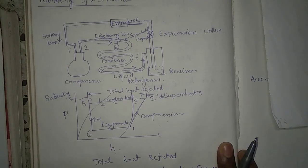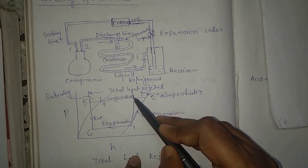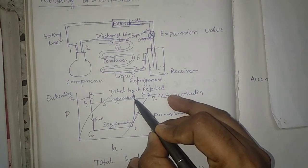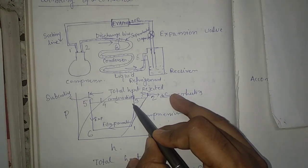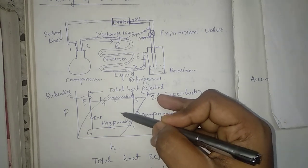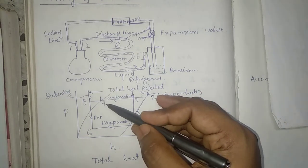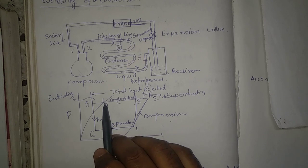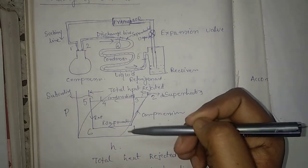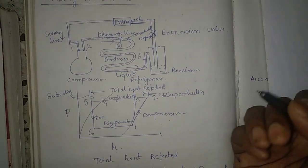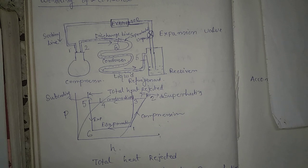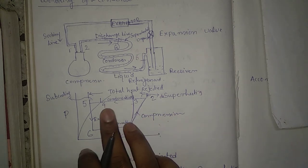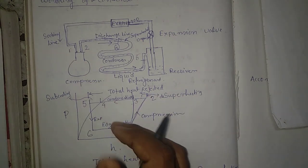In process three to four, the saturated vapor refrigerant gives up its latent heat and is condensed to a saturated liquid refrigerant. In the pH diagram, this region lies between the saturated vapor line and the saturated liquid line. The phase transforms from saturated vapor to saturated liquid by rejecting latent heat. This process is called condensation, and it is part of the total heat rejection process.